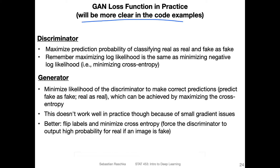In an earlier video on the original GAN, we saw that the paper mentions gradient ascent for training the discriminator — maximizing the prediction probability of classifying real as real and fake as fake. But as discussed in the logistic regression lecture, maximizing the log likelihood is the same as minimizing the negative log likelihood, which we can think of as cross entropy. So we can use regular binary cross entropy in PyTorch to optimize the discriminator — we don't have to do gradient ascent.